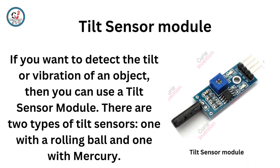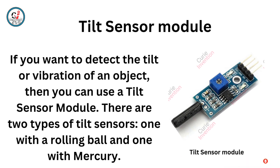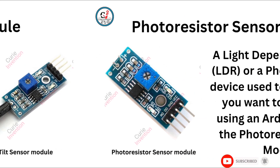Tilt Sensor Module. If you want to detect the tilt or vibration of an object, then you can use a Tilt Sensor Module. There are two types of tilt sensors: one with a rolling ball and one with mercury.